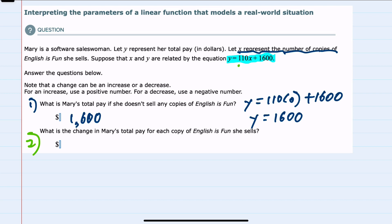So here, looking back at the slope, which is 110x, for each copy she sells, her pay will raise $110.